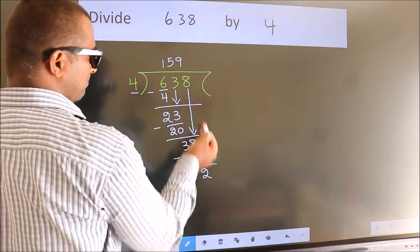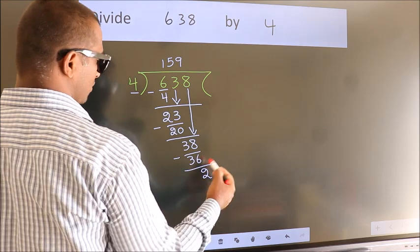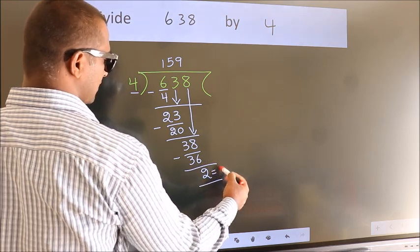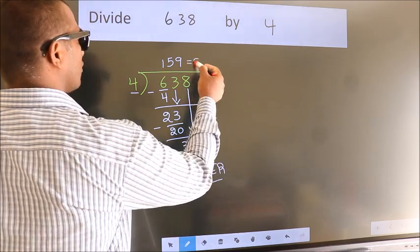No more numbers to bring down, so we stop here. This is our remainder. This is our quotient.